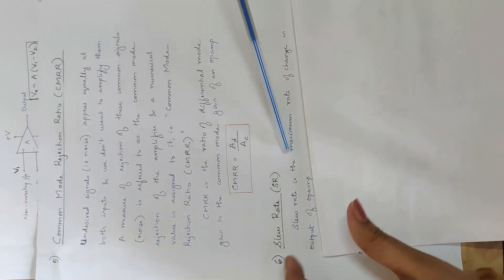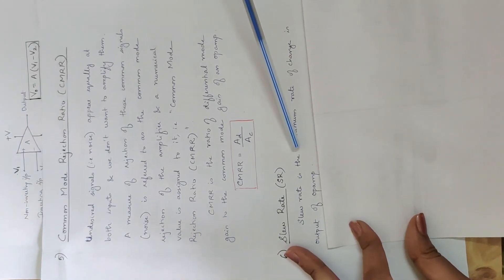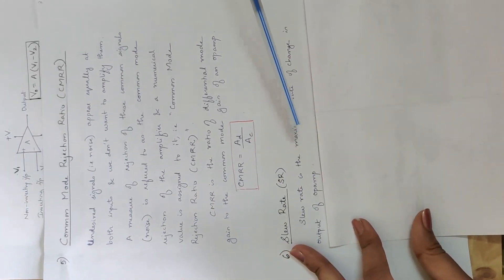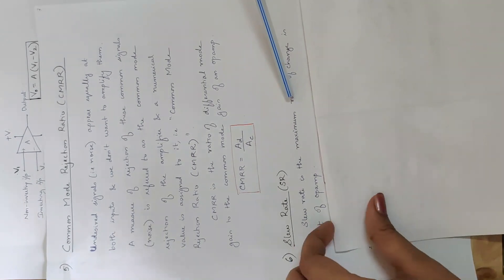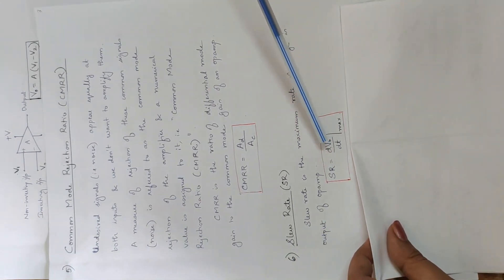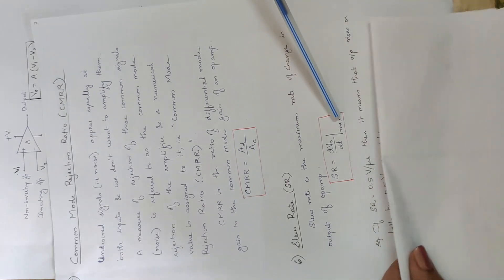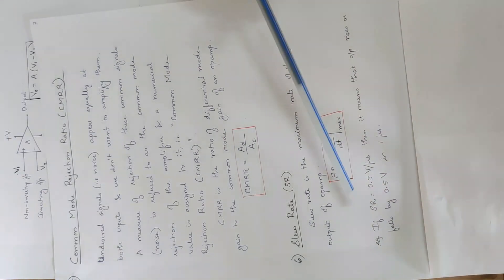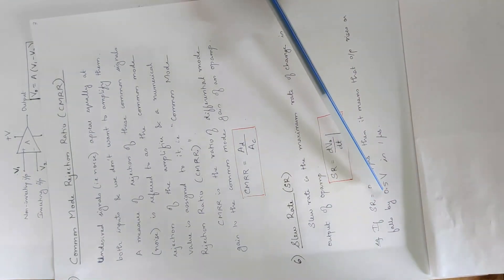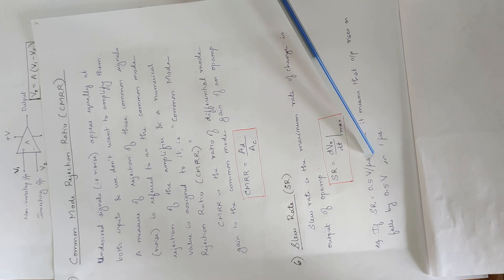Slew rate is the maximum rate of change of output of op-amp, that is dVo/dt maximum. For example, if the slew rate is equal to 0.5V per microsecond, that is the rate at which the op-amp output changes.